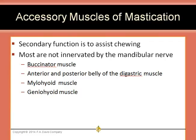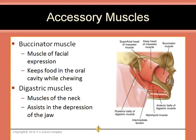There are secondary or accessory muscles of mastication that assist in chewing. Most of them are not innervated by the mandibular nerve. These include the buccinator, the digastric, the mylohyoid, and the geniohyoid. The buccinator is a muscle of facial expression that helps keep food in the oral cavity while chewing, and it is innervated by the facial nerve (cranial nerve 7). The digastric muscles are muscles of the neck that assist in depression of the jaw; the anterior belly is innervated by the mandibular nerve, while the posterior belly is innervated by the facial nerve.